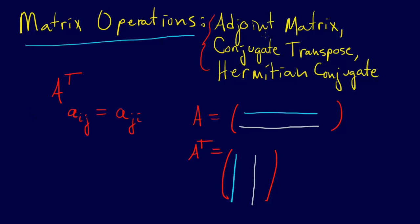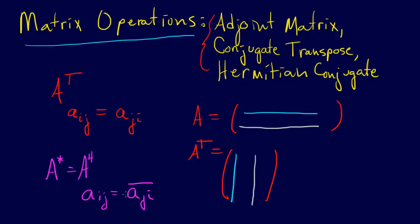All we do when we take the conjugate transpose is change our notation. We write A* or A^H, and that means A_ij equals the complex conjugate of A_ji — that is, A_ji transposed. We could also say this equals A transpose conjugate — take the conjugate of that.